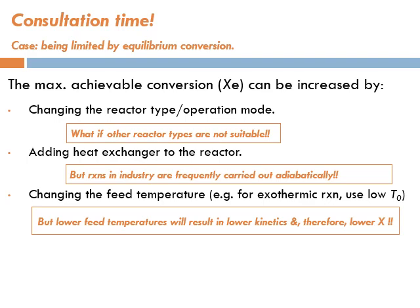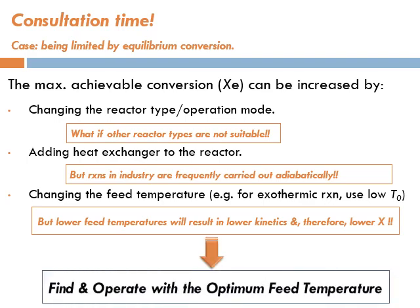The problem is: if I reduce the temperature, this will reduce the reaction rate as well, which could lead to lower conversion. So what's the solution? High temperatures are bad, low temperatures are bad — therefore we need to find and operate at the optimum feed temperature. That is the topic of today.